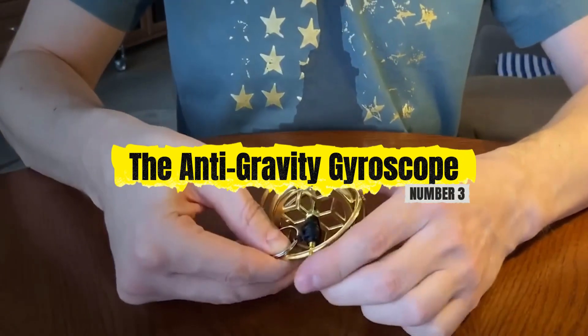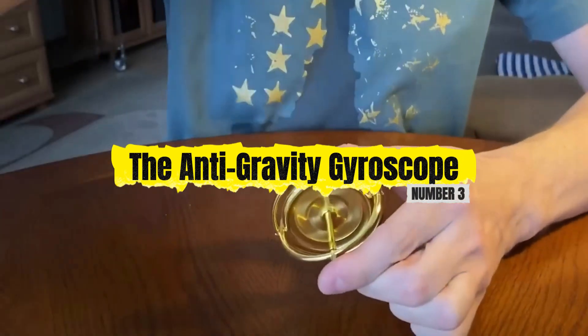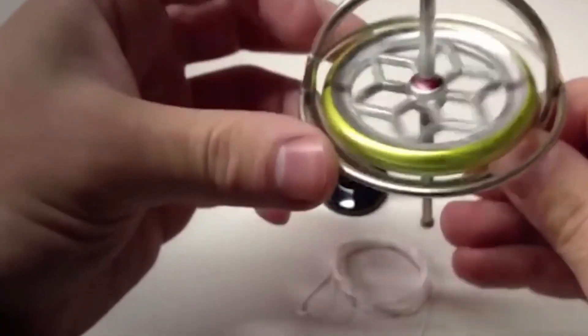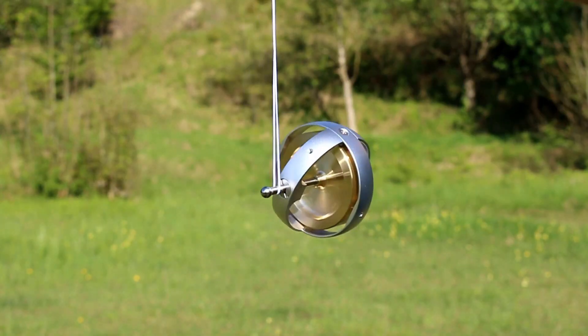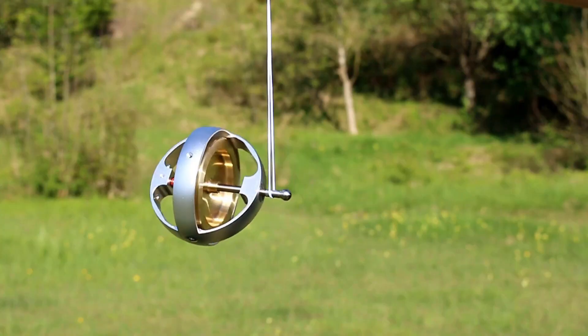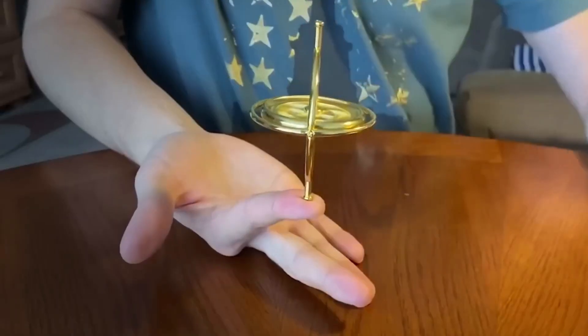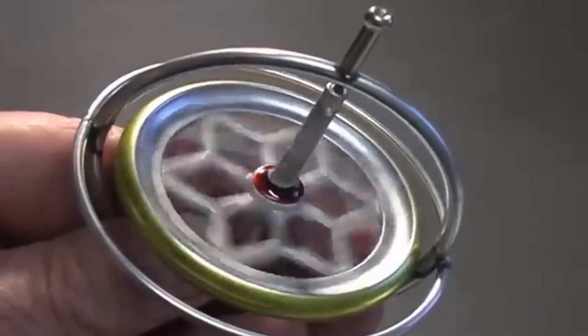Number 3. The Anti-Gravity Gyroscope. What if you could balance a spinning wheel on the tip of your finger, or even on a string, as if gravity didn't apply? That's the power of the Anti-Gravity Gyroscope. This isn't actually anti-gravity, but a brilliant display of gyroscopic precession.